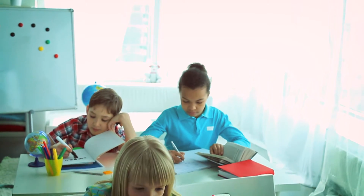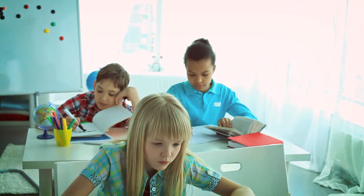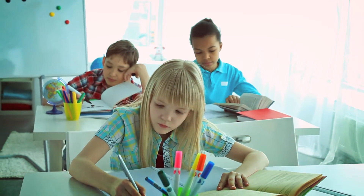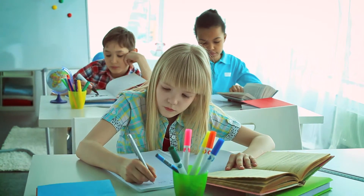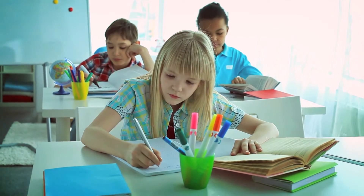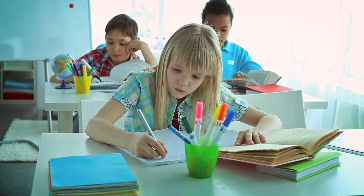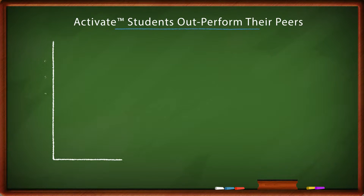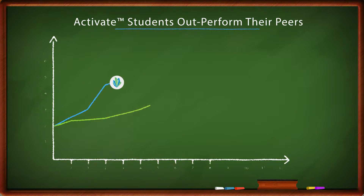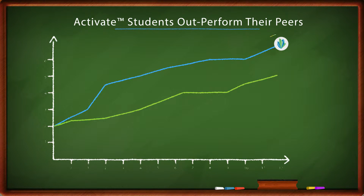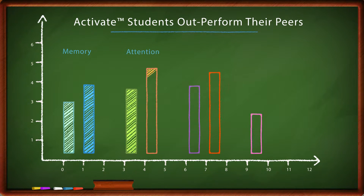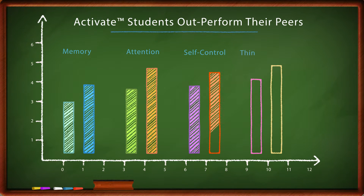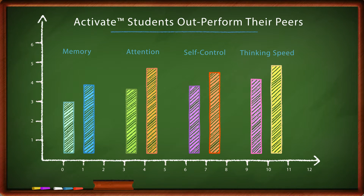The performance of kids using Activate versus control groups of similar students who didn't get Activate training show the difference that cognitive training can make. Our kids outperform their peers in reading and math because they've also increased their memory, their attention, their self-control, and their thinking speed.